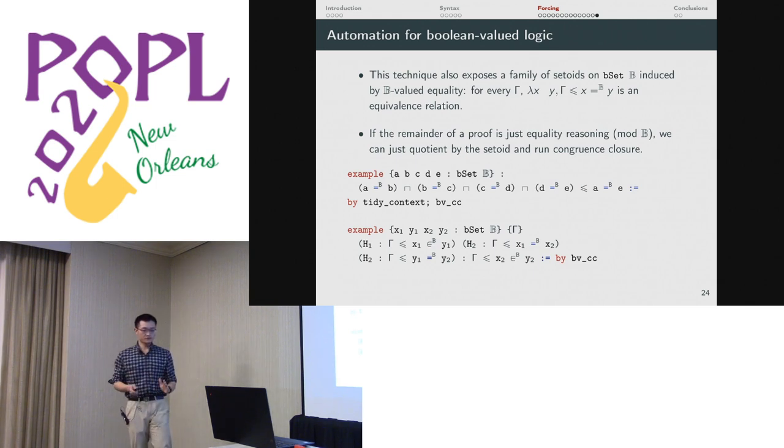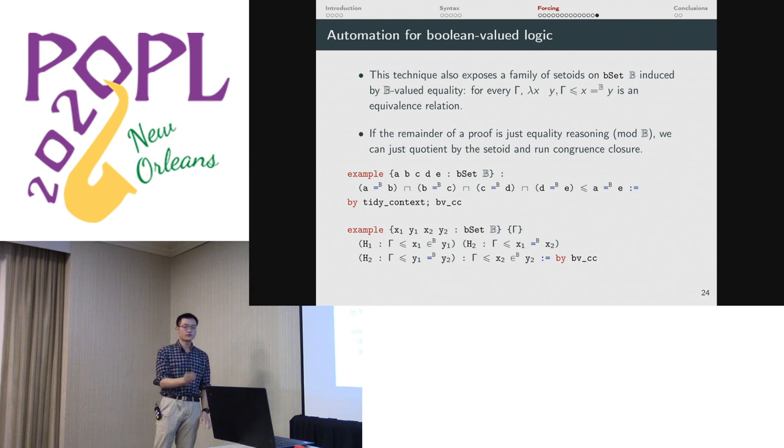One thing that was also crucial for shortening some proofs was using the fact that quotients are built into Lean's type theory. Because if we get to a point where we're replaying our first order proof, but inside a Boolean-valued logic, and we just have to do some equality reasoning, like there's a chain of equalities, but these are Boolean-valued equalities in context somewhere, we just have to chain them together, rewrite some memberships, then you can just quotient by the appropriate equivalence and call congruence closure. And it's easy to wrap this into a single tactic, which will do it for you.